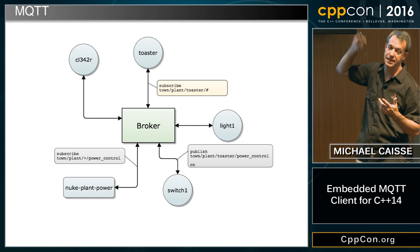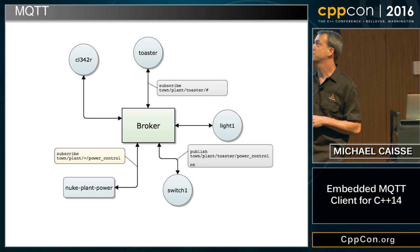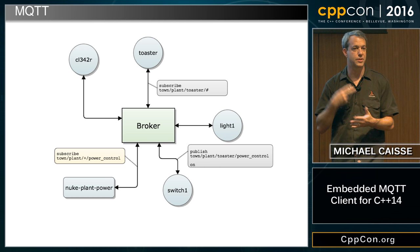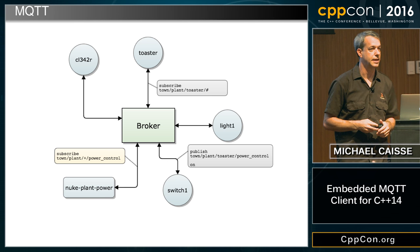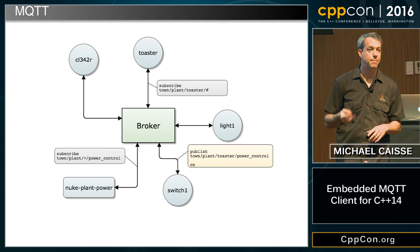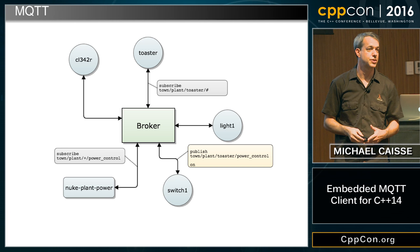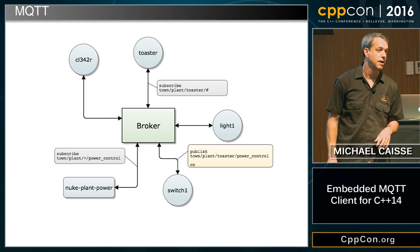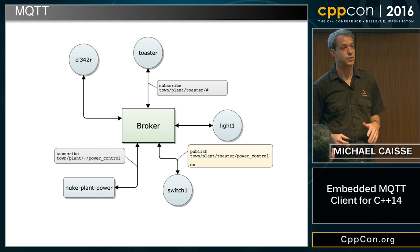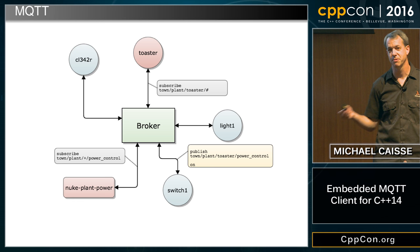Over here, the new plant power is subscribing to 'town/plant/+/power_control', where the plus means a single replacement — a wildcard for just a single thing in that spot. Switch number one is going to publish to 'town/plant/toaster/power_control' with data 'on'. This matches what the toaster wanted because it matches the first part, so the toaster turns on. Unfortunately, it also matches the power plant, so the nuclear power plant comes on at the same time. Probably not expected, but that's the basic idea of MQTT — just passing messages around.